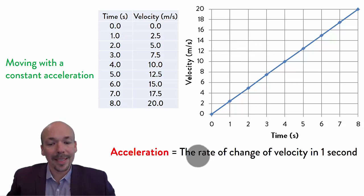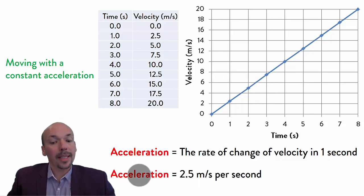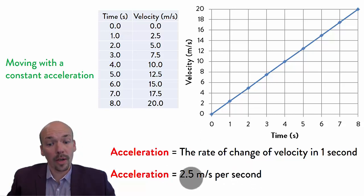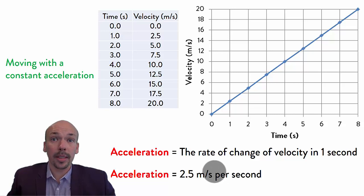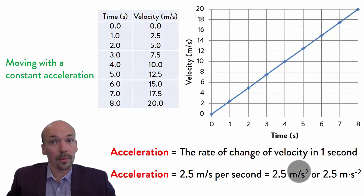What does acceleration mean? Acceleration is the rate of change of velocity in 1 second. So to calculate acceleration, you need to know how much the velocity changed in 1 second. In this case, the acceleration is 2.5 meters per second per second — that's the change it made. So for every second, the velocity changed by 2.5 meters per second. We write this as 2.5 meters per second squared. The square is just the unit — we do not square the number 2.5 in a calculator.